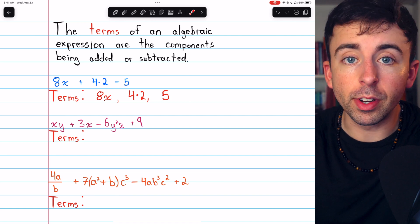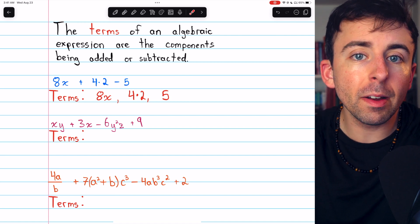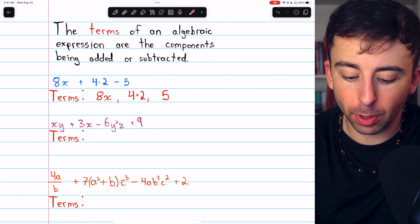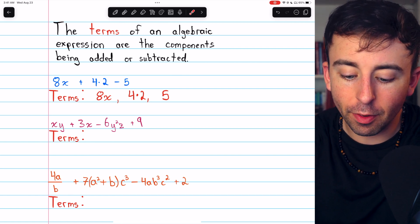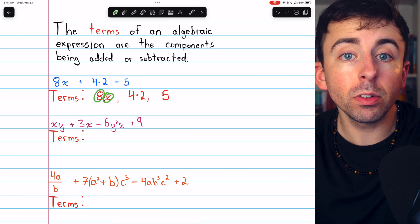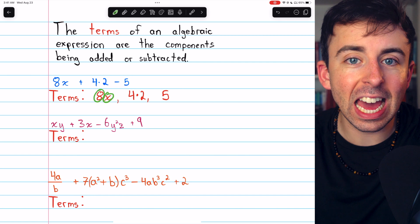Now the factors of a term are the things that are getting multiplied together in each term. For example, in 8x, the factors are 8 and x because those are the two things getting multiplied together.